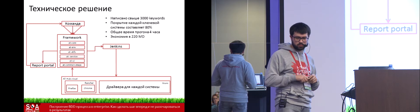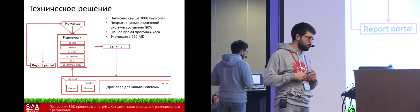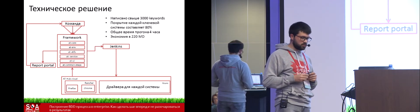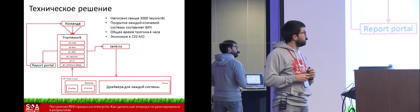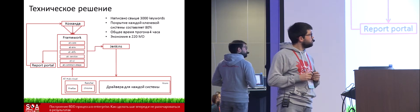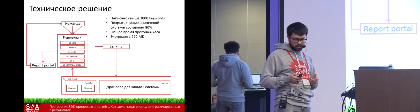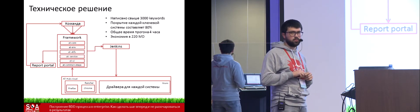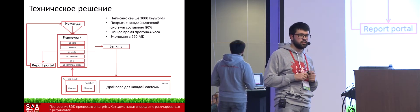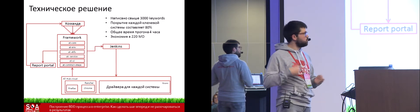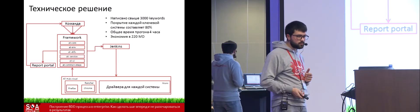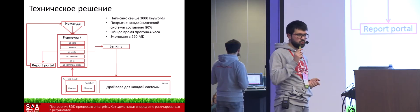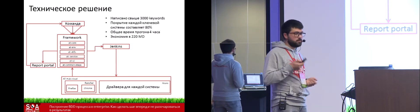To move further and having a technical solution in place, we started to accumulate the background. At the moment we have more than 1,000 keywords written. The system front is covered at about 80%, and about 70% of the backends, which has really saved a lot of time — around four hours saved, because regression tests that used to take a couple of hours now take around four days including time for defect analysis, error correction, and so on.